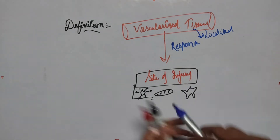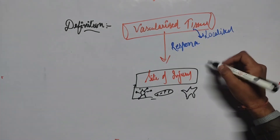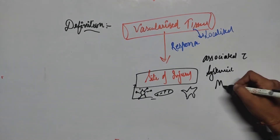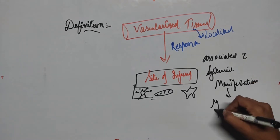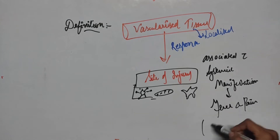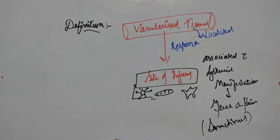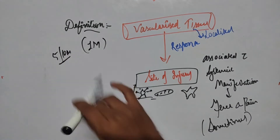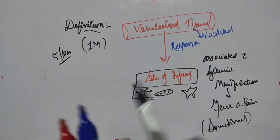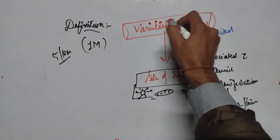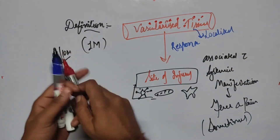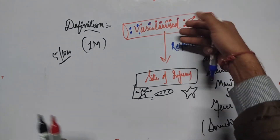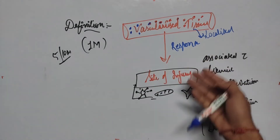Acute inflammation is sometimes associated with systemic manifestations like fever and pain — not always, but most of the time. The definition is important because it usually carries marks in exam questions. The blood vessels contain WBCs, leukocytes, and antibodies, which come out at the site of injury during cellular events, which we'll discuss later.